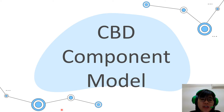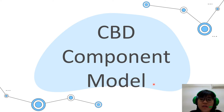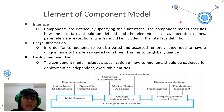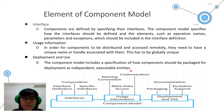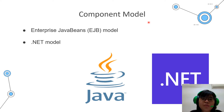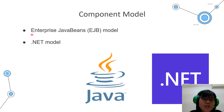Hi, my name is Ho Jia Hui and my metric number is 261589. Today, our group will present the CBD component model. There are three elements of the component model: interface, usage information, and deployment and use. Each element has three sub-elements. In our group G, we have chosen two component models to present: the Enterprise Java Bean (EJB) model and the .NET model.